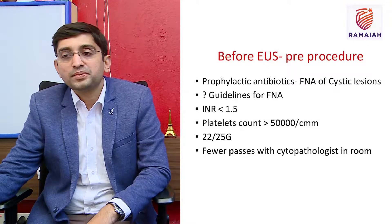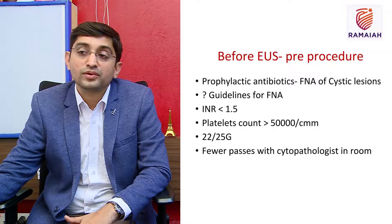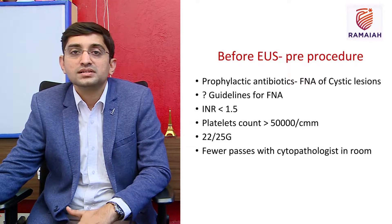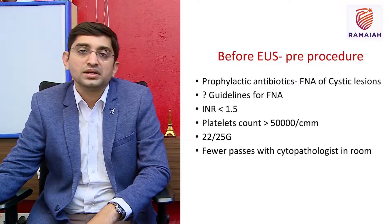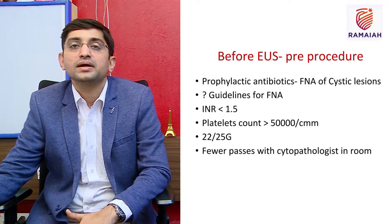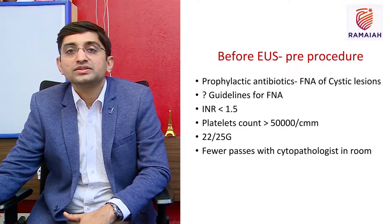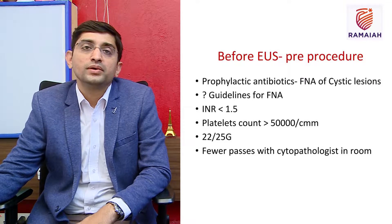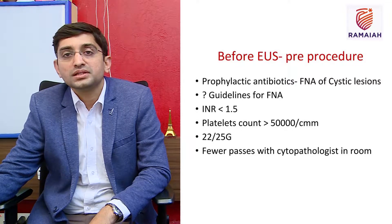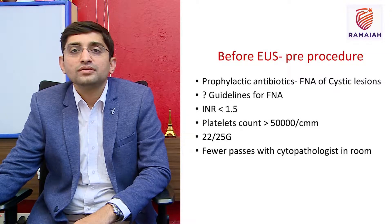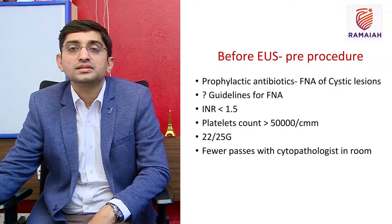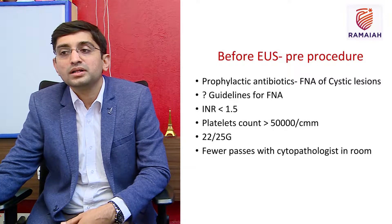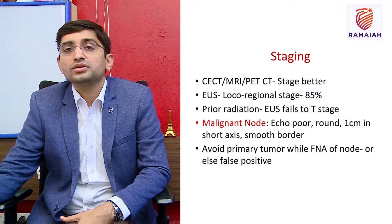In the pre-procedure phase, we should check whether prophylactic antibiotics are given, especially when doing a transluminal fine needle aspiration in cystic lesions, as there is a chance of cyst infection. INR should be less than 1.5 and platelet count more than 50,000. For diagnostic evaluation, we typically use either a 22-gauge or 25-gauge needle, with the current dictum being fewer passes to get adequate tissue, followed by specimen evaluation by an on-site pathologist or in the pathology room.